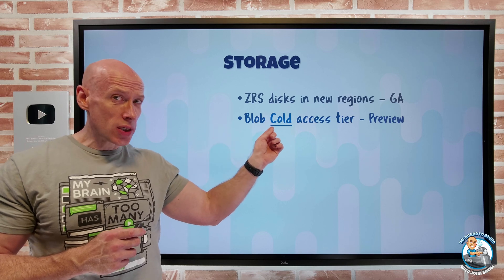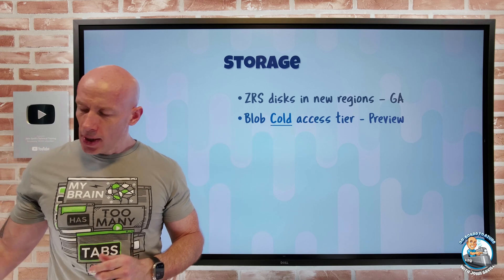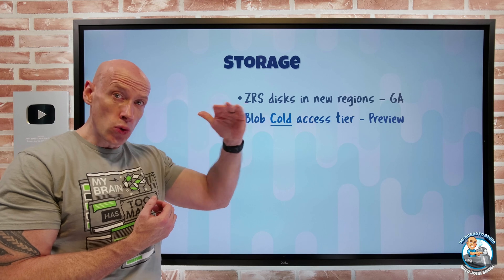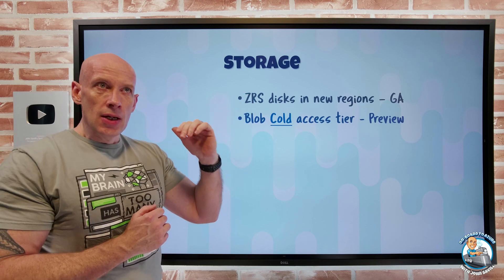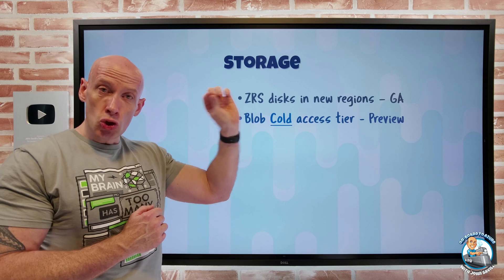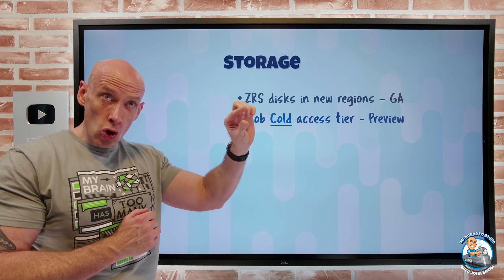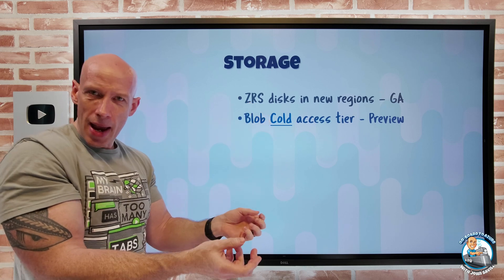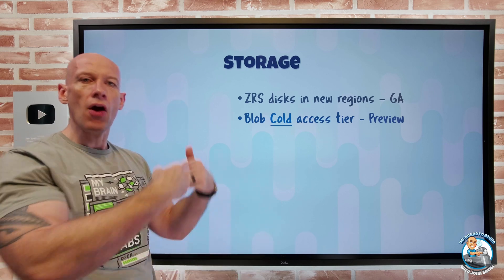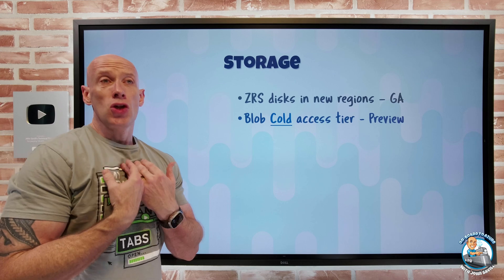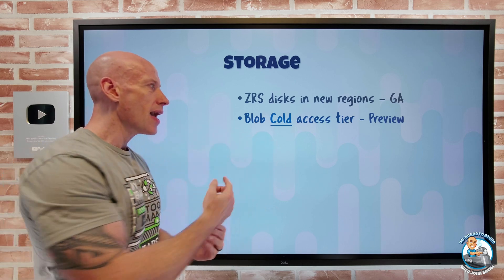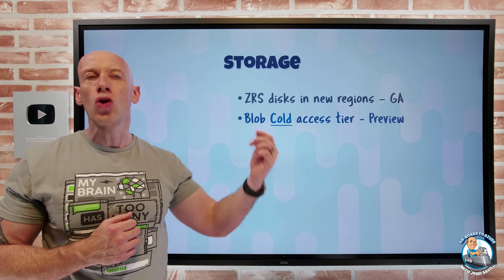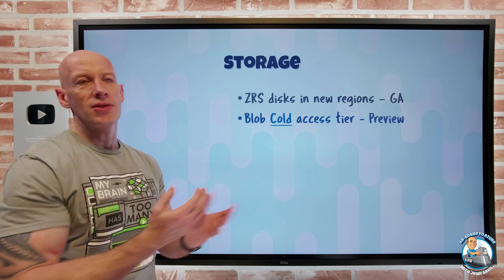Blob cold access tier is now in preview. With storage access tiers, we have the hot tier where you pay the most for storage but the least for transactions, the cool tier where you pay less for storage but more for transactions, and archive where you pay a tiny amount but the data is offline and must be hydrated back. You would use hot for data you're constantly interacting with, cool for data you need immediately available but interact with less, and archive for data you just need to store.